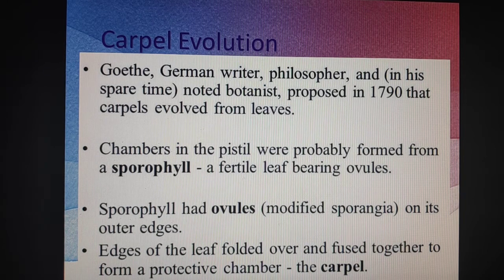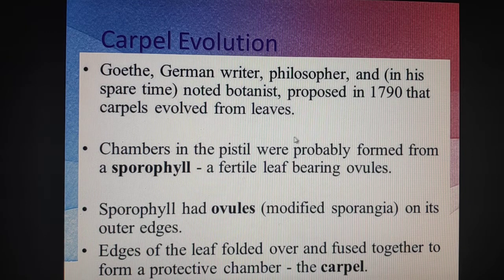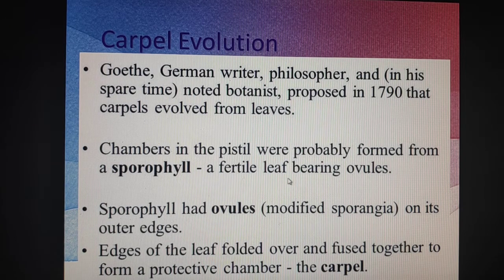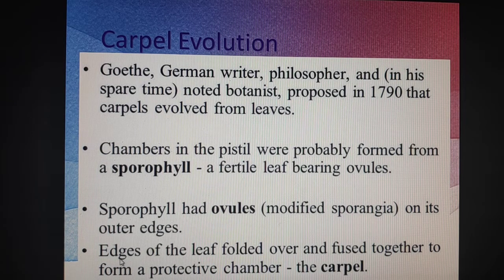The next is carpel evolution. A botanist and philosopher named Goethe proposed in 1790 that the carpels evolved from the leaves. He said that the chambers in the pistils — there are chambers in which ovules are present — he compared those chambers to sporophylls. They are formed from the sporophyll, a fertile leaf, with modified sporangia on its outer edge. These edges of the leaves actually got folded and fused together to form a protective chamber, which is the carpel.